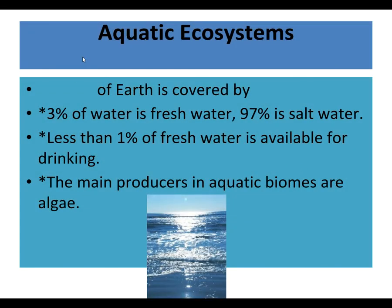Here are some quick facts. Most of the earth is covered in water, and most of that water is salt water. Only 3% is fresh water, and of that 3%, only 1% of that 3% is available for us to drink. Very little of what makes our planet the blue planet can we safely consume. And algae is the main producer - the earth is covered in water way more than there is land for trees, and that's where a lot of our oxygen comes from. Most of our oxygen comes from algae, not from trees.